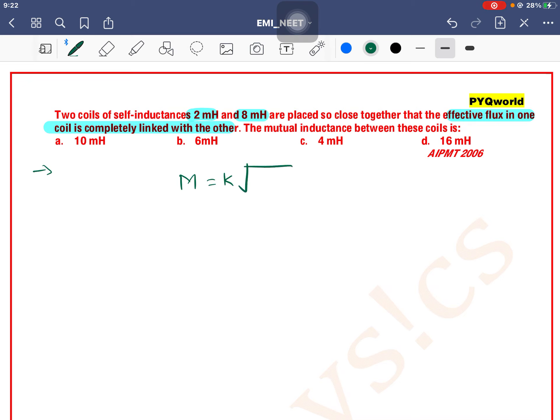Now what is given in the question? See that the flux is completely linked with the other, meaning the coupling factor value is k = 1.